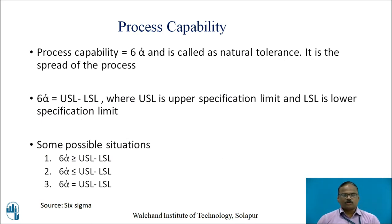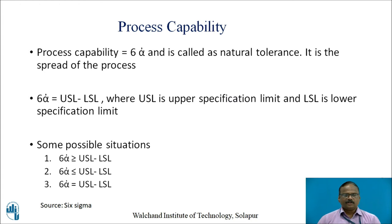Process capability is also called six sigma dash, meaning 99.7% of the components should follow the normal distribution curve, and it is also called natural tolerance. It is also referred to as the spread of the process. Six sigma dash is the process capability where USL is the upper specification limit and LSL is the lower specification limit, and the difference between these two determines whether the process is within control or not.